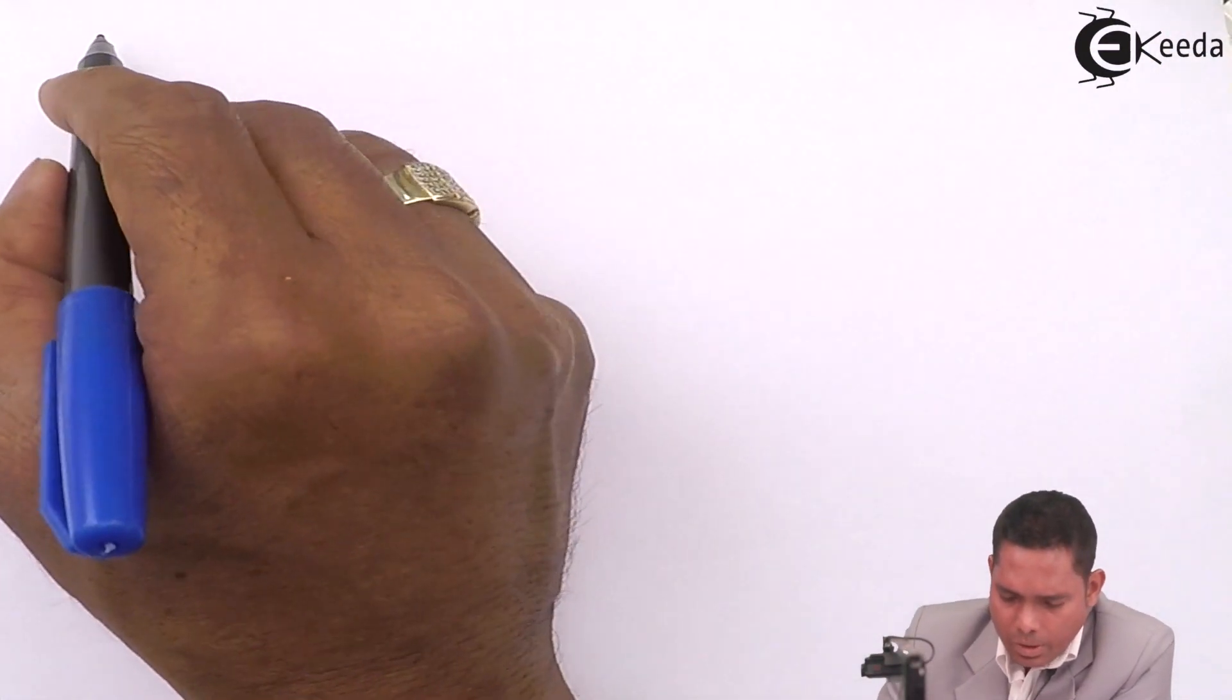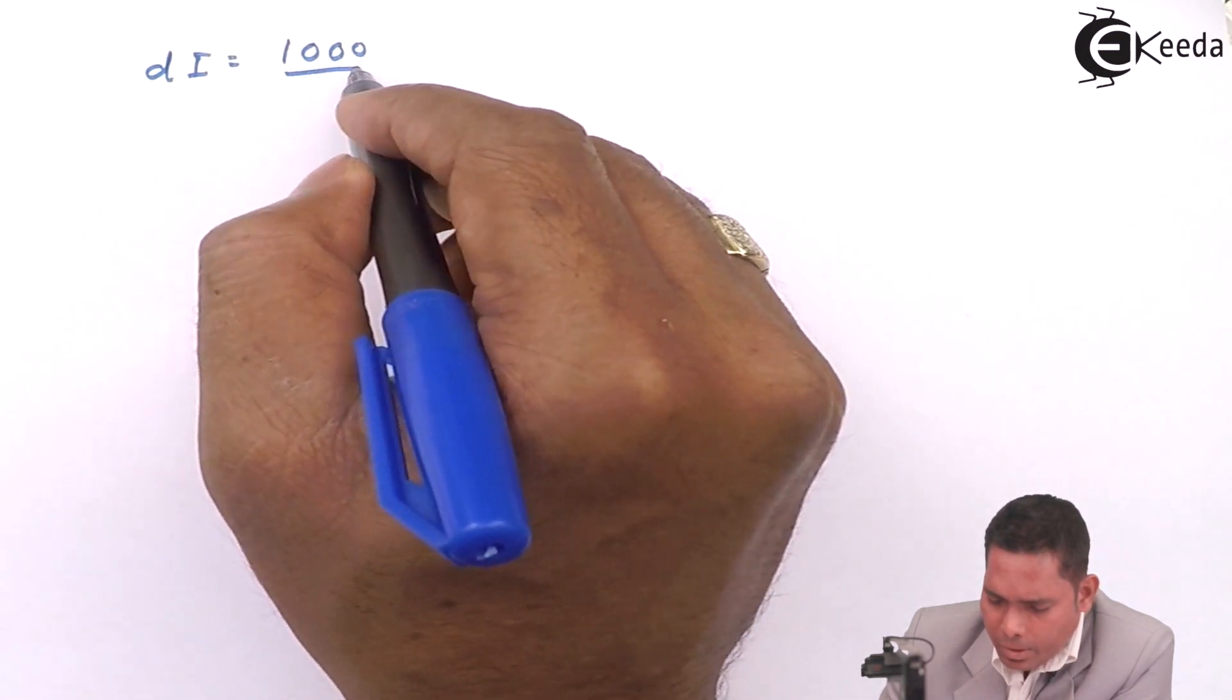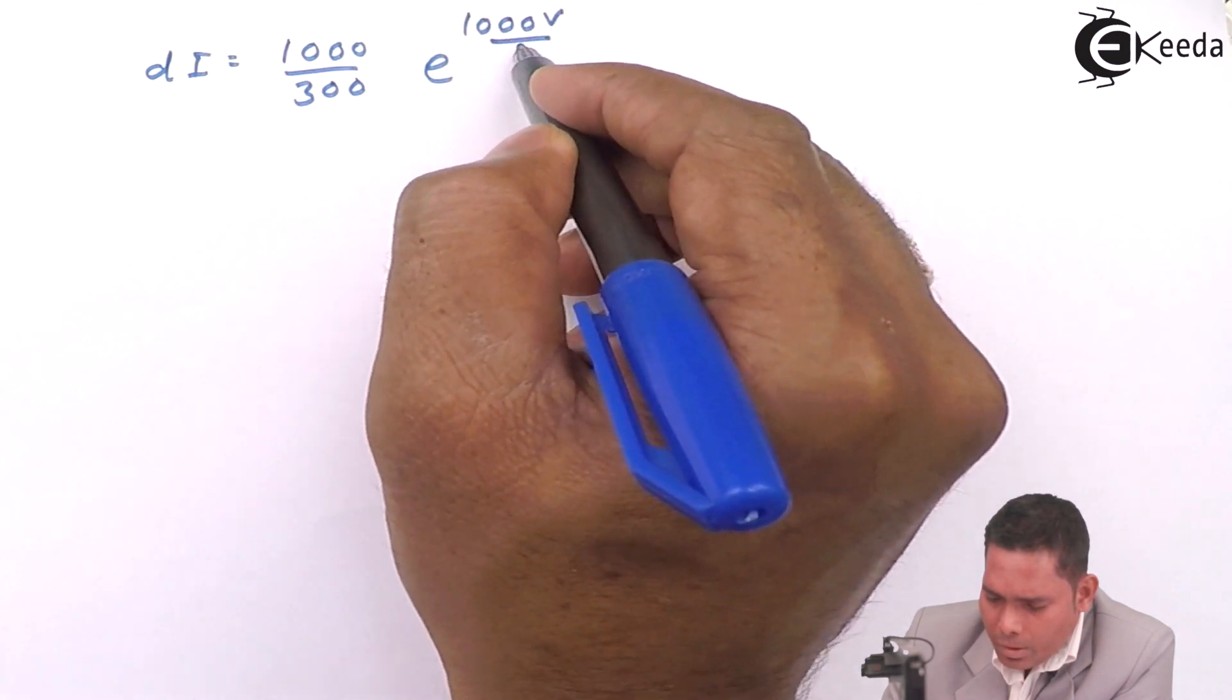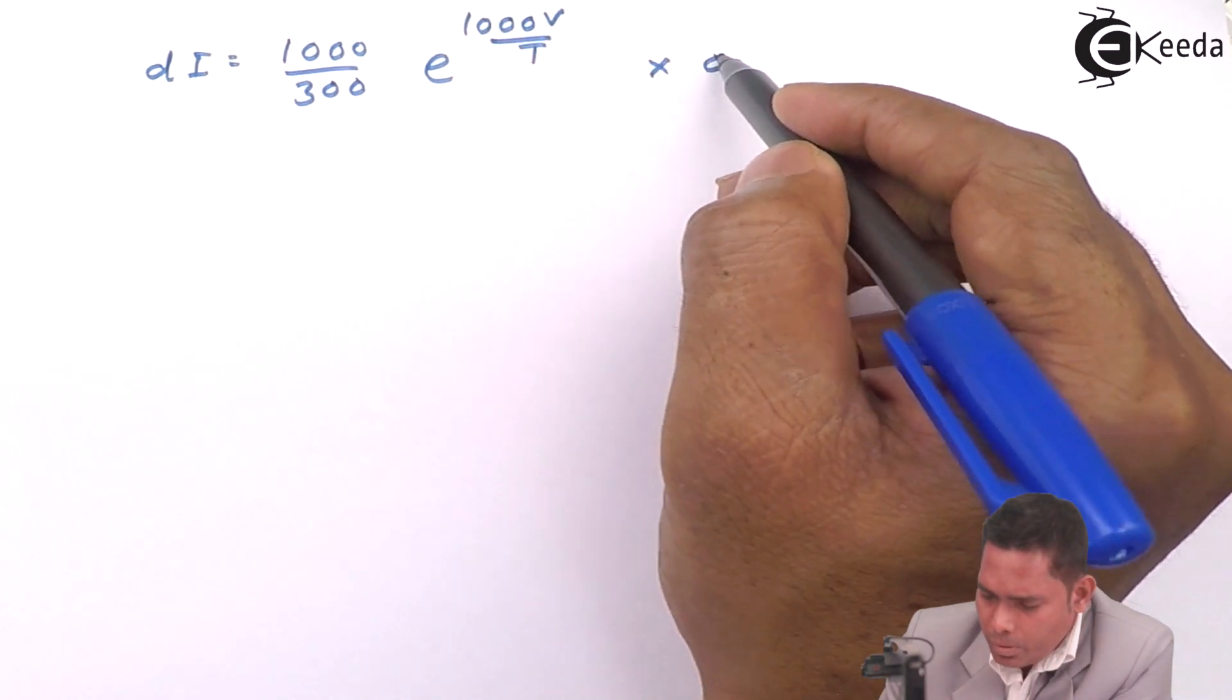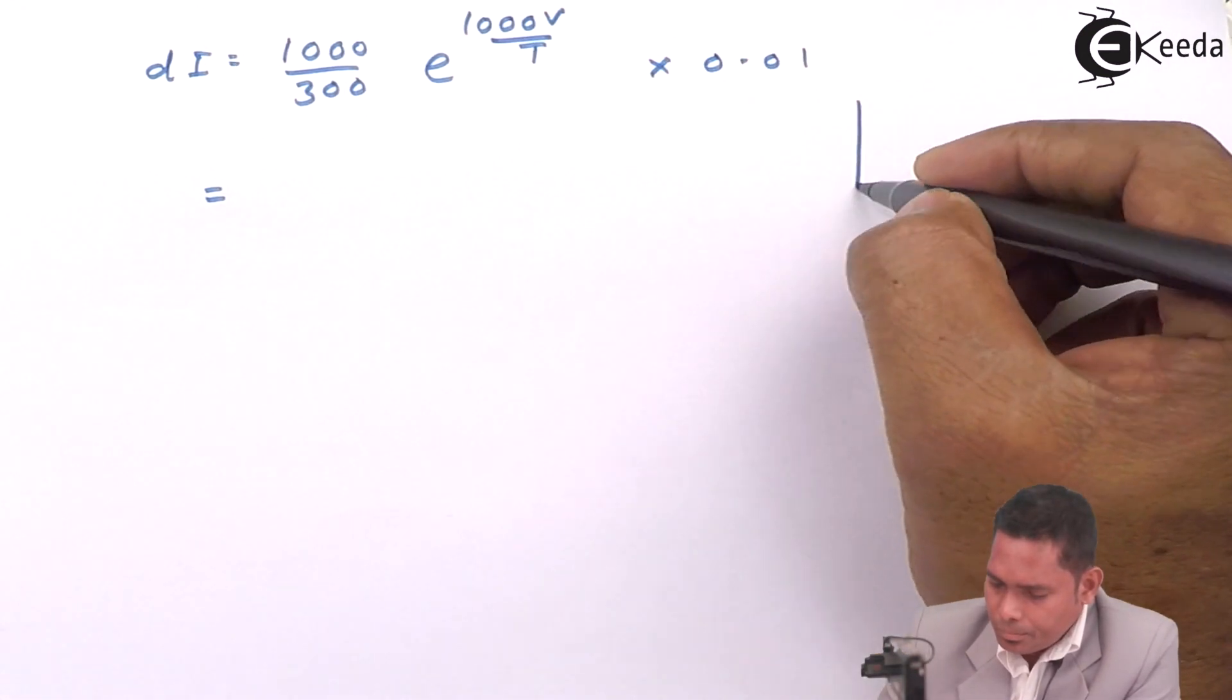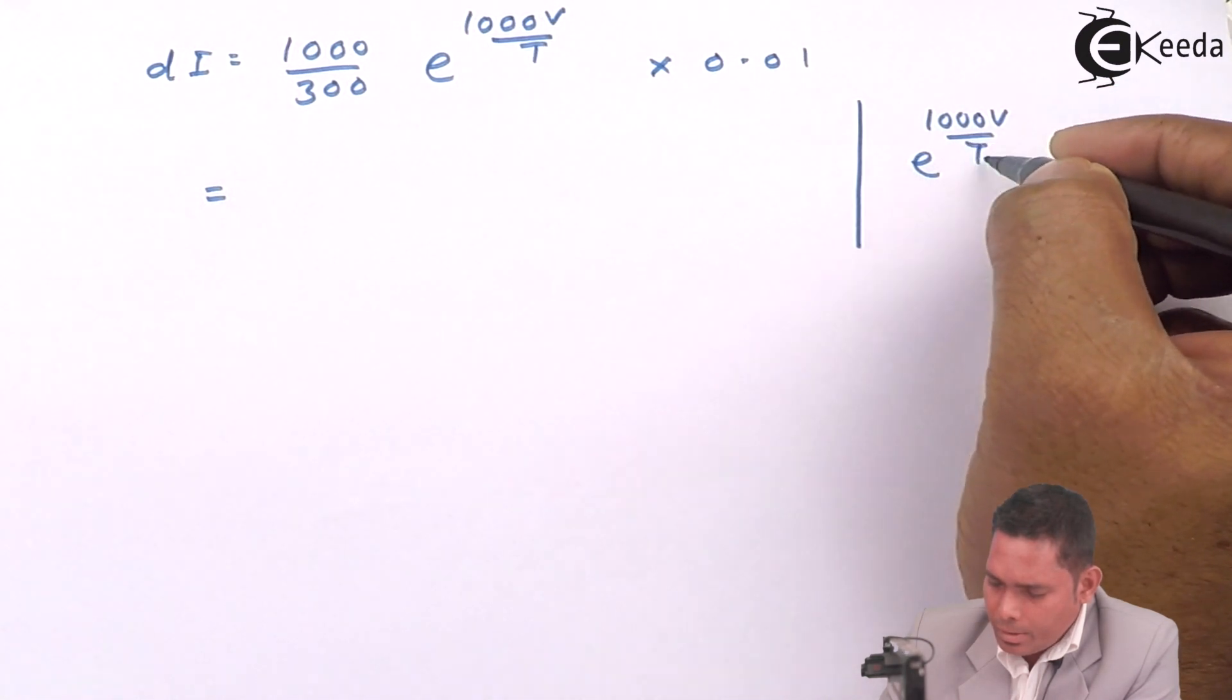To rewrite the equation, I have dI equals 1000 divided by 300, e raised to 1000V/T, times 0.01.